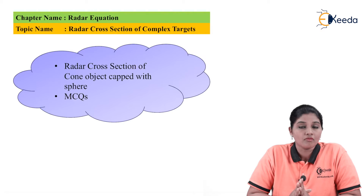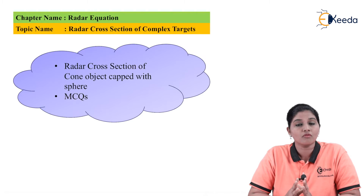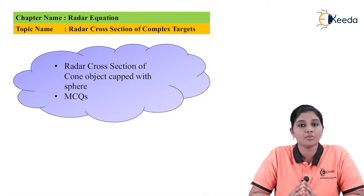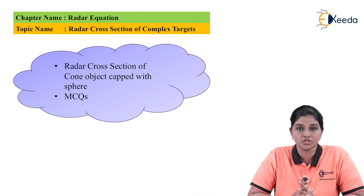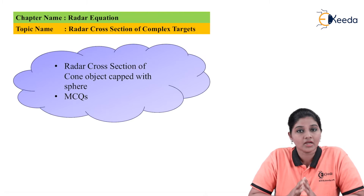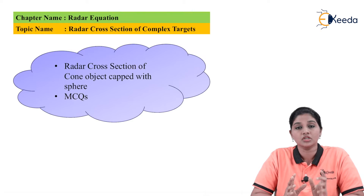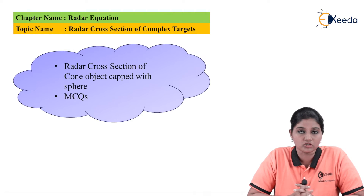As a rule of thumb, it is always considered that whenever we want to find out the radar cross-section or RCS of a complex object, it is always convenient to divide or separate out the complex object into smaller standard objects. The RCS of the standard objects are already known, so with the help of these, the individual RCS values are then summed up to find out the RCS of the complex object.